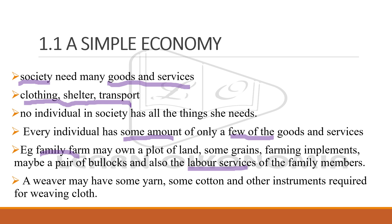Now take the case of a weaver. The weaver may have some yarn, some cotton, and instruments required to weave cloth. The members of the family farm need several products and services apart from the grain they cultivate. Similarly, the weaver is weaving cloth, but that doesn't mean he can live with cloth alone — he needs several other products and facilities in life.